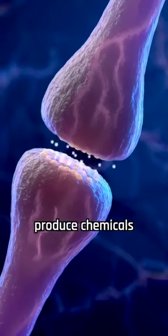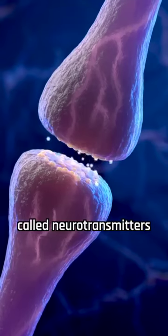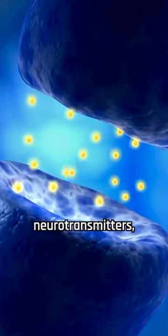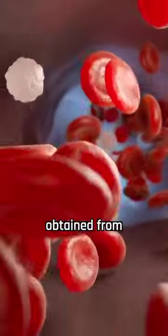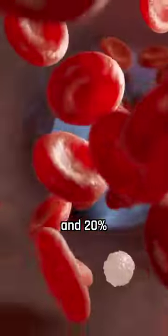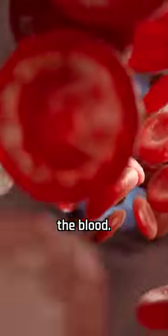Your neurons produce chemicals called neurotransmitters to relay their signals. To produce neurotransmitters, neurons extract 75% of the sugar glucose obtained from the food you eat and 20% of the oxygen from the blood.